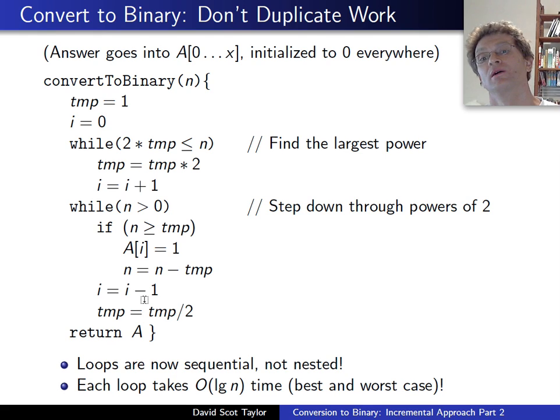6 is not larger than 16, so we're not going to set any bit, but now we go down to 8. 6 is not larger than 8. Now we go down to 4. 6 is larger than 4. Set the bit, subtract out 4, and continue. So this ends up doing all the important work that we were doing before and cuts out the less important work. Now we have two loops, but they're not nested, and each loop takes logarithmic time.